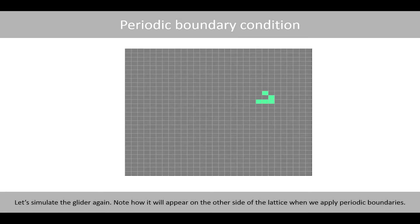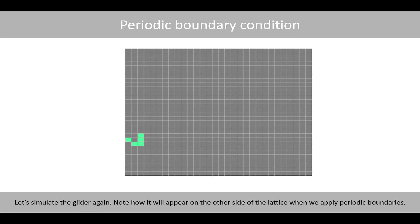Let's simulate the glider again. Note that it will appear on the opposite side of the lattice when we apply periodic boundaries.